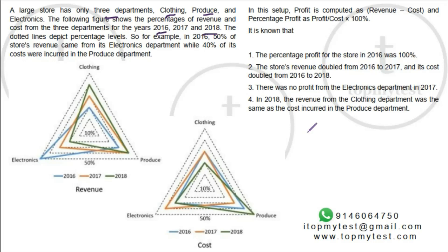Instead of drawing six pie charts, they've given you two charts — this is like a triangle graph, or a radar graph, whatever you want to call it. For example, in 2016, 50% of the revenues came from electronics, 40% of costs came from the produce department, and so on.